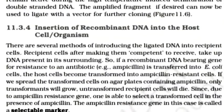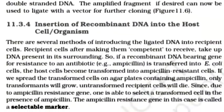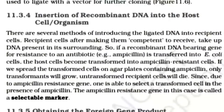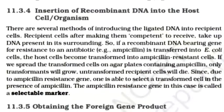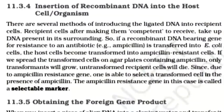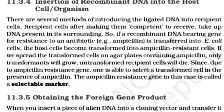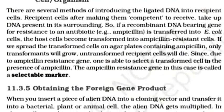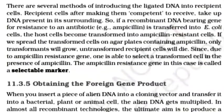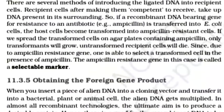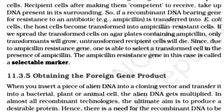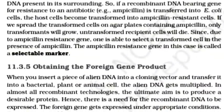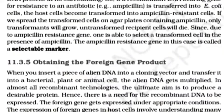There are several methods of introducing ligated DNA into recipient cells. Recipient cells, after being made competent to receive DNA, take up DNA present in their surroundings. If a recombinant DNA bearing a gene for resistance to ampicillin is transferred into E. coli cells, the host cell becomes transformed into an ampicillin-resistant cell. If we spread the transformed cells on an agar plate containing ampicillin, only transformants will grow; untransformed recipient cells will die. The ampicillin resistance gene in this case is called a selectable marker.